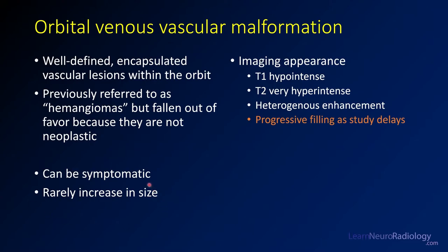They can increase in size as well, although it's somewhat rare. On imaging, you tend to have T1 hypointense masses that are very bright on T2, with heterogeneous enhancement. On post-contrast, they tend to progressively fill from outside to inside over the course of the study as the delay increases.